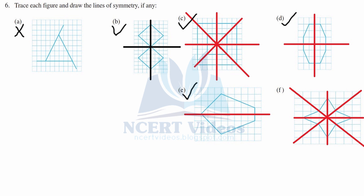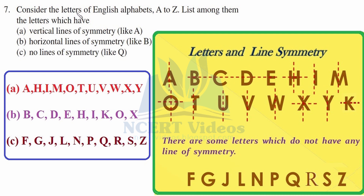You will be able to get the reflected part if you place a mirror on any of these lines of symmetry. Question seven: consider the letters of the English alphabet A to Z. Letters with a vertical line of symmetry include: A, H, I, M, O, T, U, V, W, X, and Y.